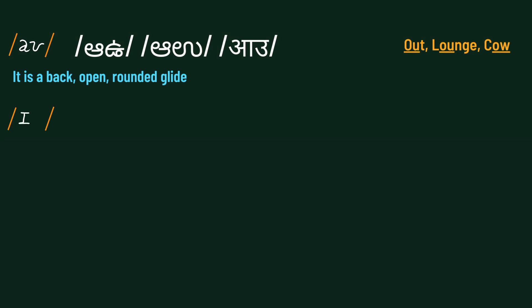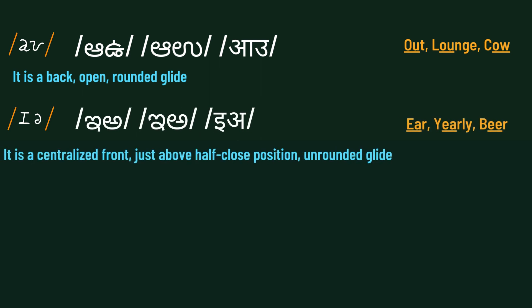The sixth diphthong is /ɪə/. It is a central, centralized front, just above half-close position and rounded glide. Examples are: ear, early, bear.